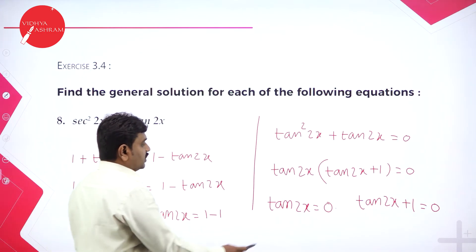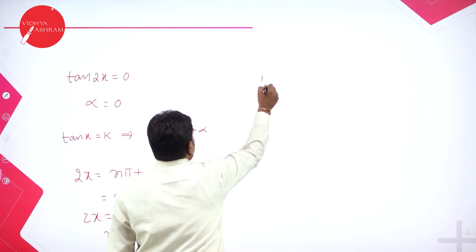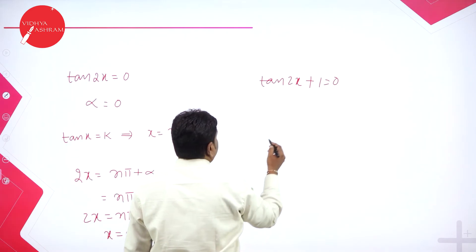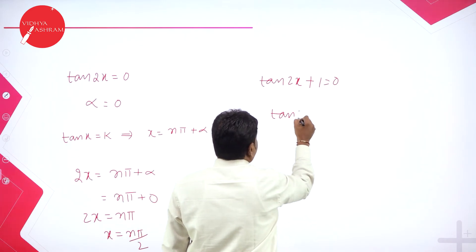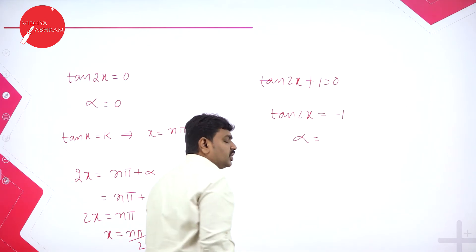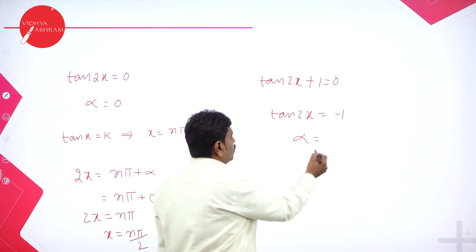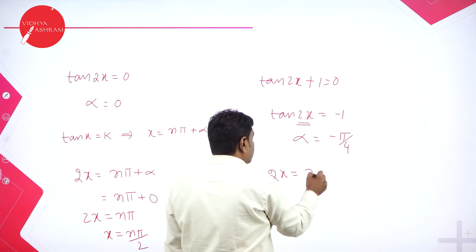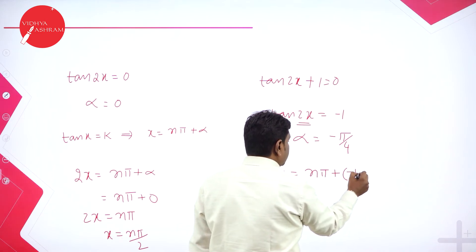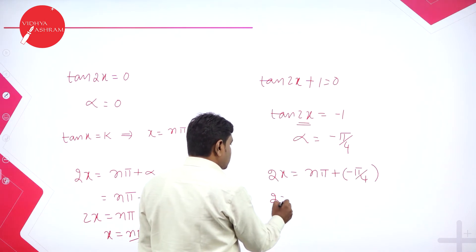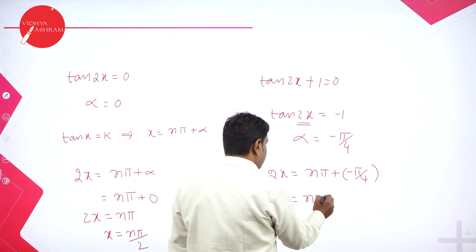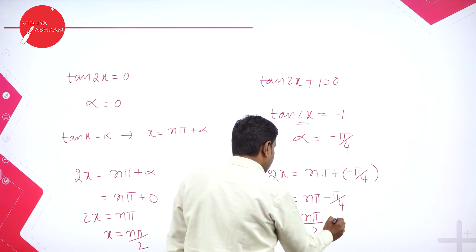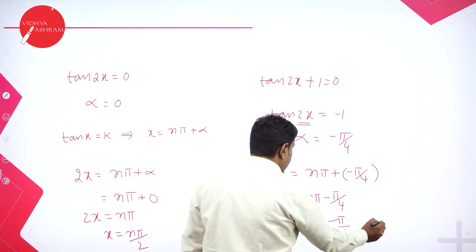The second part: tan 2x plus 1 equals 0, so tan 2x equals minus 1. In the tan table, tan(pi by 4) equals 1, so alpha is pi by 4 but it is negative, giving minus pi by 4. The general solution: since we have 2x, write 2x equals n pi plus (minus pi by 4). Dividing by 2: x equals n pi by 2 minus pi by 8. Where n belongs to integers.